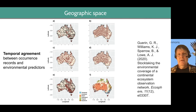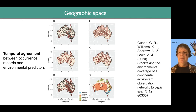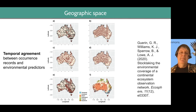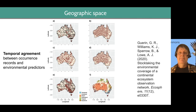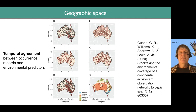Just make sure that your occurrence data match your environmental data when you're doing the modeling. Once you've done that, you can plot them on a map and look at how representative your sampling is of geographic space — how systematic was the sampling, or did you have random stratified sampling? There are all these different things to consider when you're looking at your data.